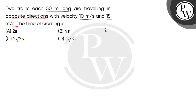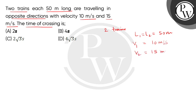In the question we have given two trains. The length is given: L1 is equal to L2 is equal to 50 meter. We have to find the time of crossing. The speed of the first train is 10 meter per second and that of the second is 15 meter per second.